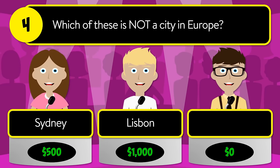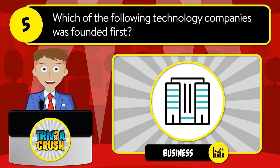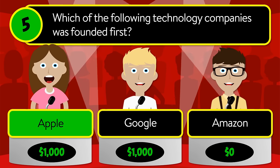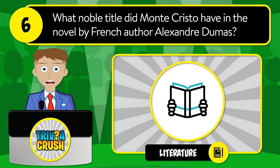Lisbon, or Glasgow? The correct answer is Sydney. Question number five: which of the following technology companies was founded first? Was it Apple, Google, or Amazon? The correct answer is Apple.